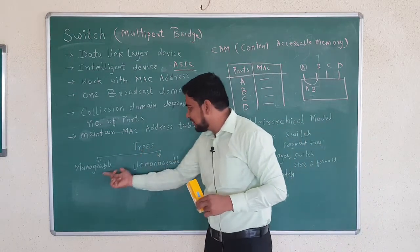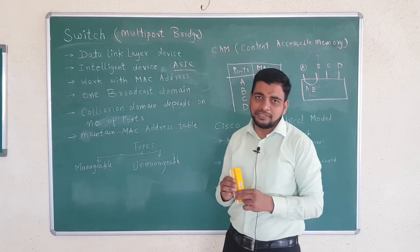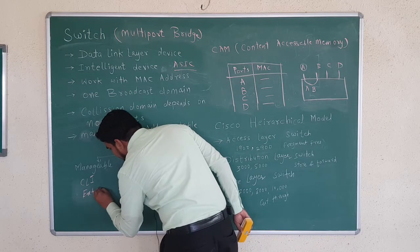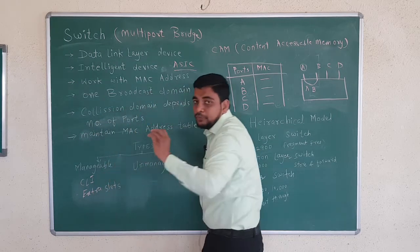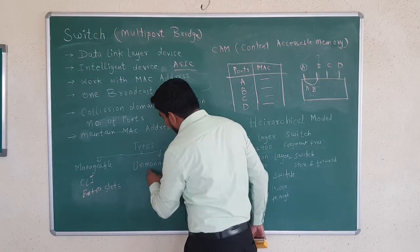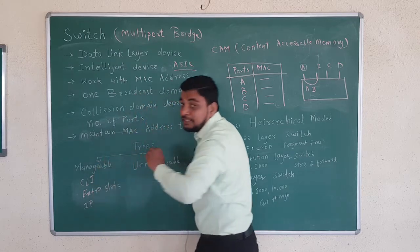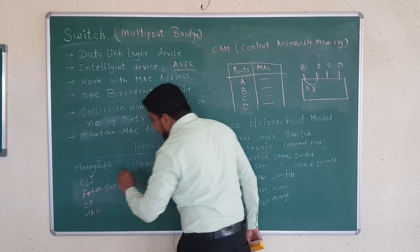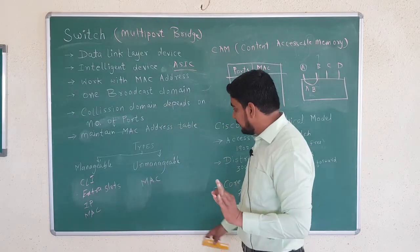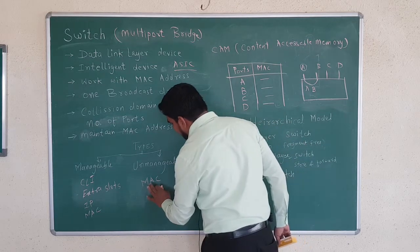Types of switches: manageable and unmanageable switch. In a manageable switch, you can manage it — you can access its Command Line Interface (CLI), and you can add extra slots, similar to how extra slots are available in a router. Manageable switches are expensive compared to unmanageable switches. Manageable switches can understand both IP address and MAC address. Unmanageable switches can understand only the MAC address, and are cheaper compared to manageable switches.